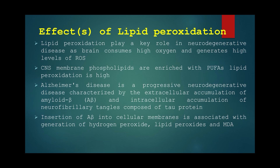Alzheimer's disease is characterized by extracellular accumulation of amyloid beta and intracellular accumulation of neurofibrillary tangles composed of tau proteins. Studies have proved that insertion of amyloid beta into the cell membrane is associated with generation of hydrogen peroxides and lipid peroxides, as well as their byproducts like MDA.